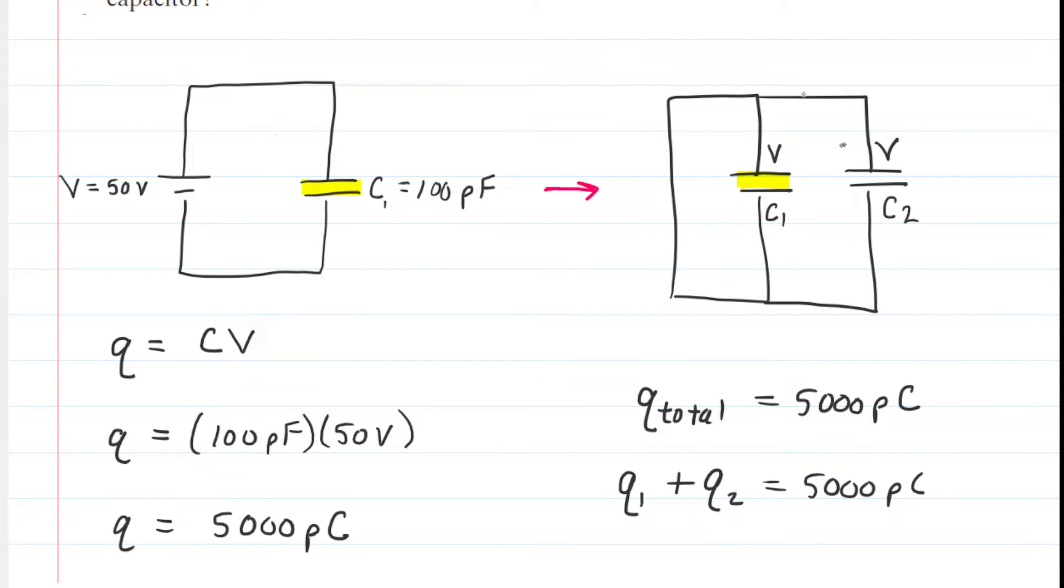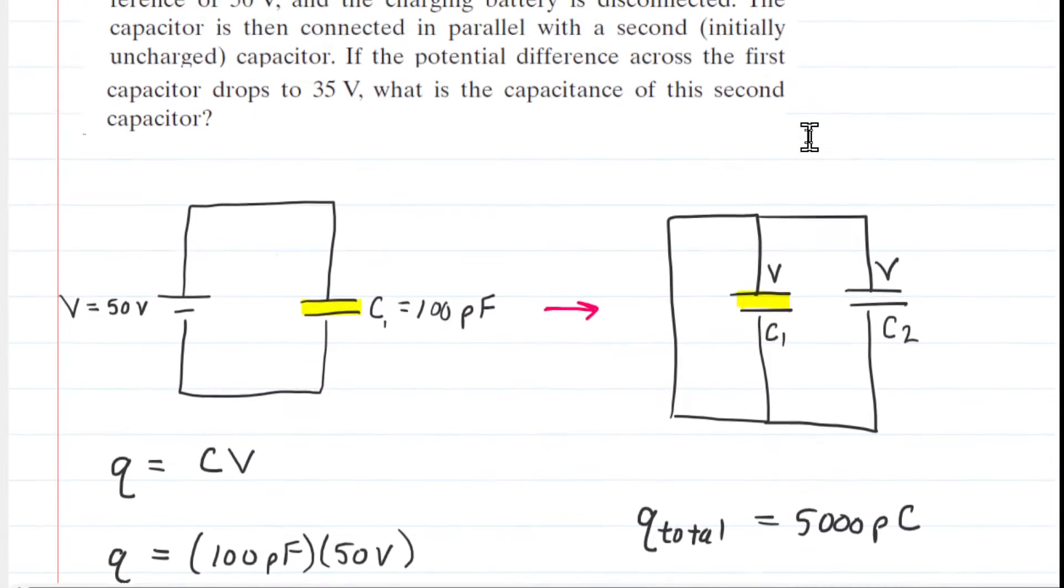So we're not using V1, V2. We're just using V to denote the potential difference across each set of plates. Because again, that potential difference is the same when the capacitors are connected in parallel.